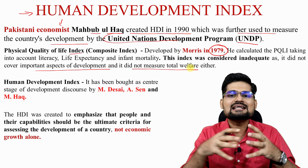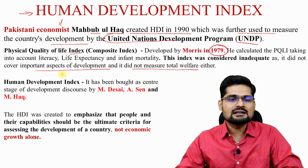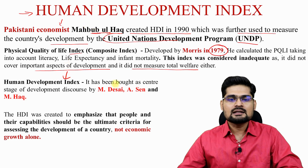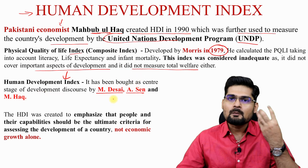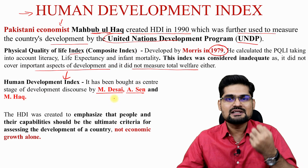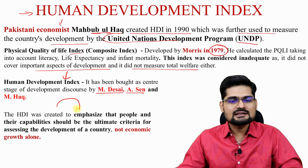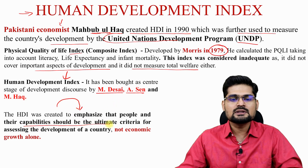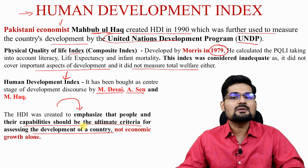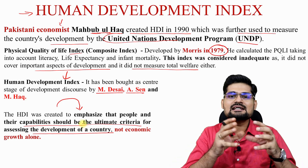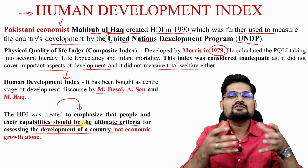There was a need for a measuring scale that could measure the entire world using some common parameters. The Human Development Index was created by Mahbub ul Haq and others like Anand and Sen together, and it was brought to the center as a measurement of development discourse. HDI was created to emphasize that people and their capabilities should be the ultimate criteria for assessing the development of a country — not just economic growth alone.